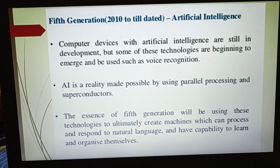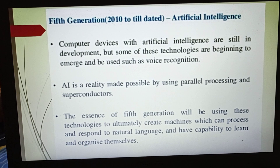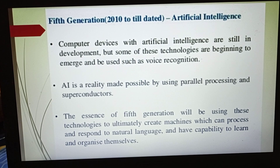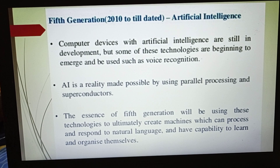The essence of the fifth generation is using these technologies to ultimately create machines which can process and respond to natural languages, and have the capability to learn and organize themselves. In this generation, quad-core and octa-core processors were also introduced. Neural networks and expert systems have been developed. The advantages are: more reliable and available in different sizes with the same features. This is the most widely used generation today, with minimal disadvantages compared to all previous generations.